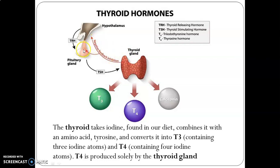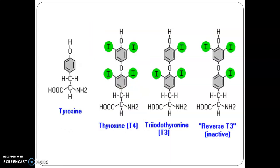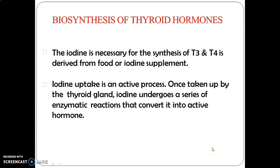The thyroid gland is located toward the pituitary gland and hypothalamus. Iodine found in our diet is combined with the amino acid tyrosine and converted into T3, which contains three iodine atoms, and T4, which contains four iodine atoms. T4 is produced solely by the thyroid gland. The basic amino acid from which thyroid hormones are synthesized is tyrosine. The three forms are thyroxine, triiodothyronine, and reverse T3, which is the inactive form.